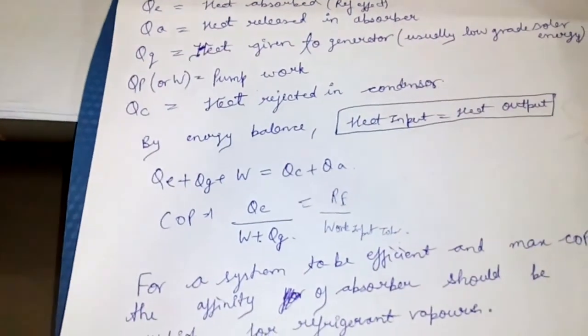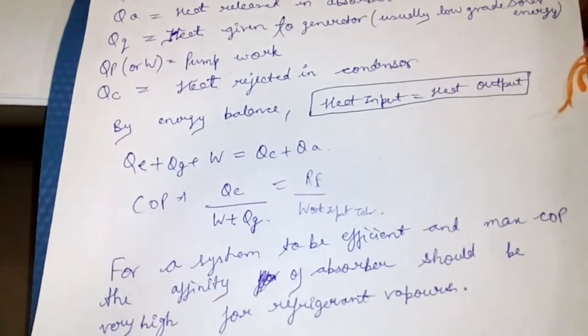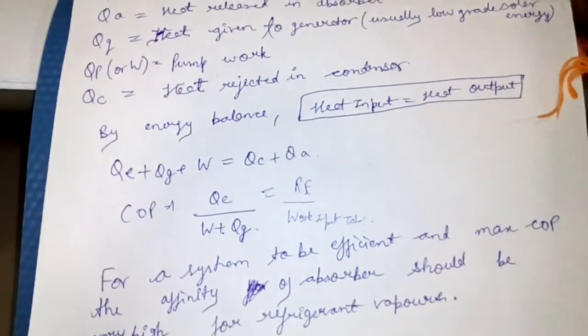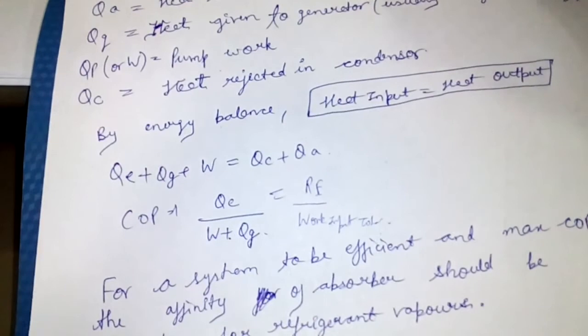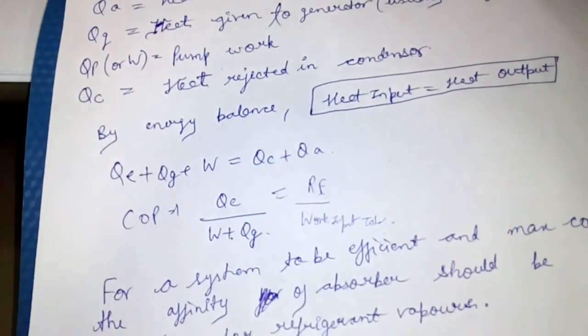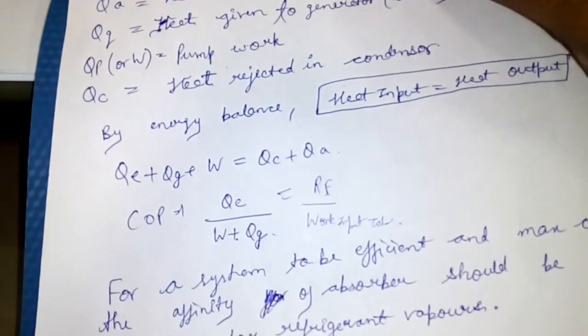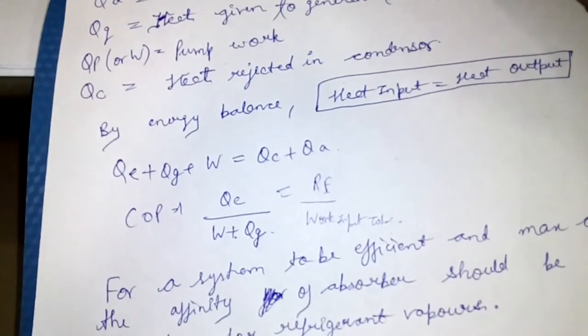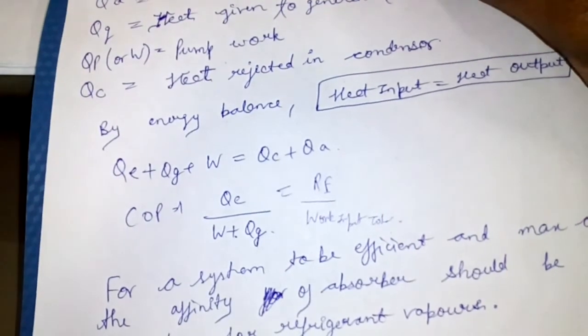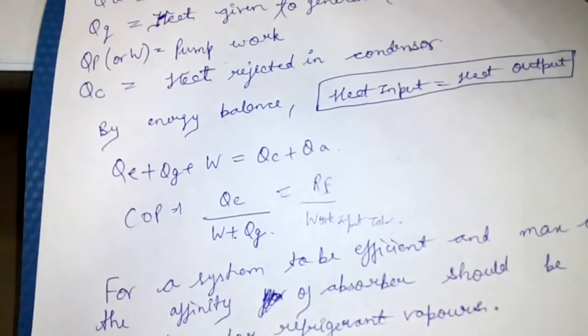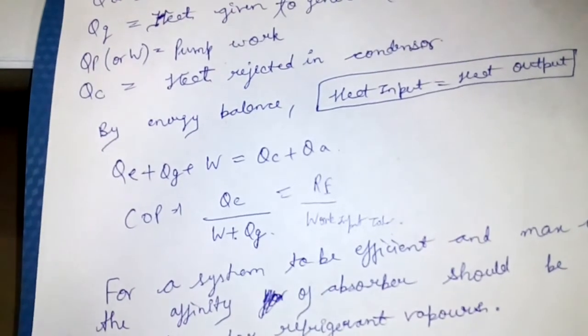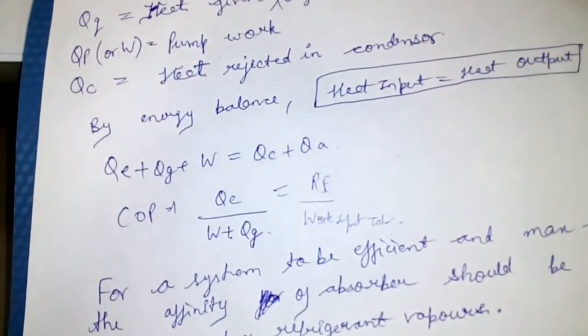Now for a system to be efficient and for maximum COP, the affinity of this absorbent, that is the absorbent present in the absorber, should be high for these vapors at low temperature.